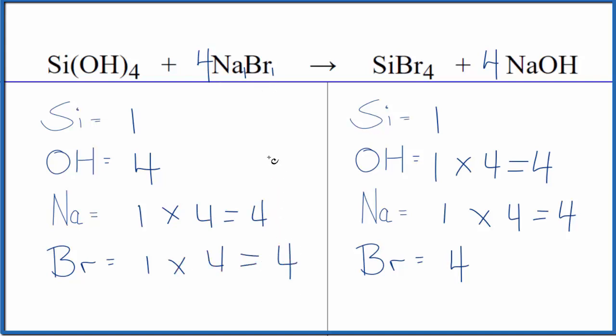This equation is balanced. So it's helpful if you have a polyatomic ion like this here and this here on both sides to count it as one thing. You get the same answer either way. It's just a lot quicker when you do the balancing.